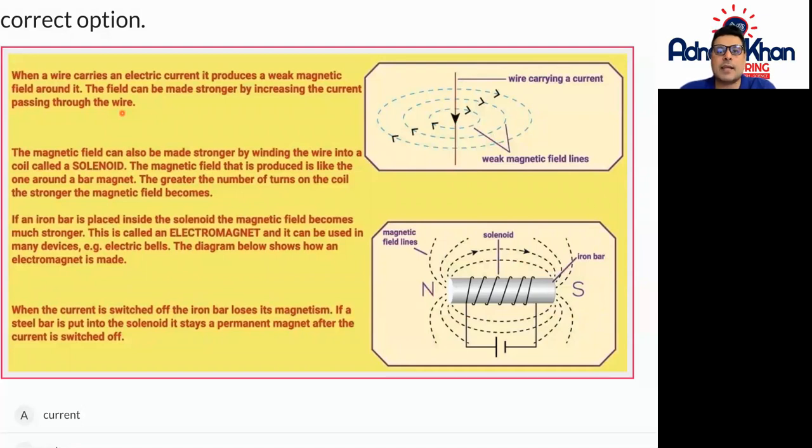When a wire carries an electric current, it produces a weak magnetic field around it. The field can be made stronger by increasing the current passing through the wire.